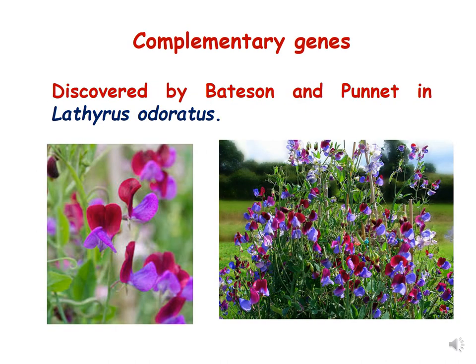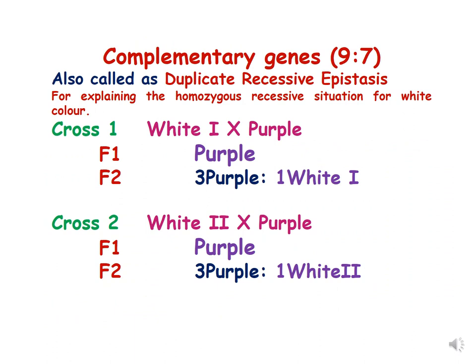The first example we are going to learn today is complementary genes, which was discovered by Bateson and Punnett in Lathyrus odoratus. The complementary ratio has two forms: 9:7 and 9:6:1. These are also called complementary genes, and they are also referred to as duplicate recessive epistasis.